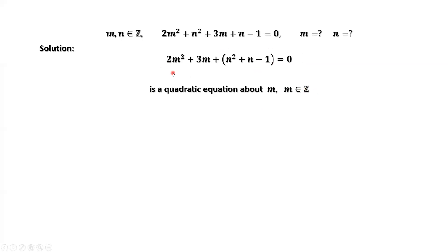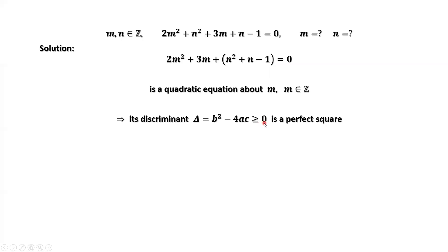Because m is an integer satisfying this equation, we have the following result: the discriminant delta must be greater than or equal to 0, and it must also be a perfect square because m is an integer. Here a = 2, b = 3, and c = n² + n - 1. So delta = b² - 4ac, and delta must be ≥ 0 and a perfect square.